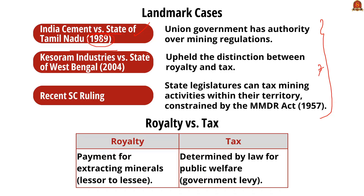The second case is Kesoram Industries versus State of Bengal. This judgment said royalty is a tax, and a cess on royalty is also a tax. The bench was smaller than the one in the India Cement case and was unable to overrule the previous ruling. The recent Supreme Court ruling stated that state legislatures can tax mineral activities within their respective territories, constrained by Parliament's Mines and Minerals (Development and Regulation) Act, 1957.